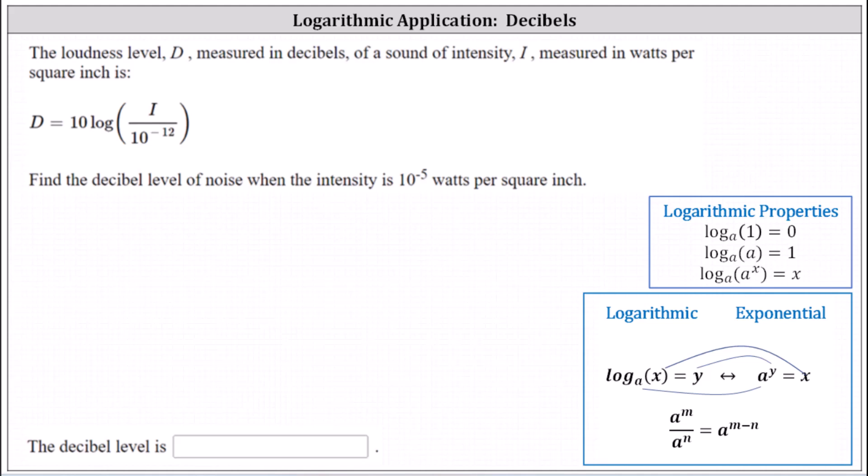Notice here they're giving us I, and we want to solve for D. To begin, we substitute 10 to the power of negative 5 for I, which gives us D equals 10 times common log of 10 to the power of negative 5 divided by 10 to the power of negative 12.